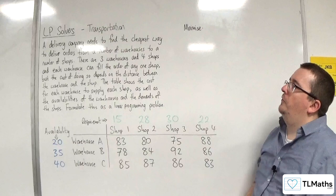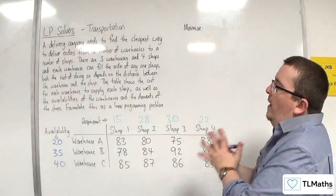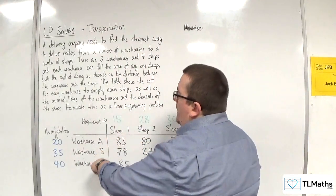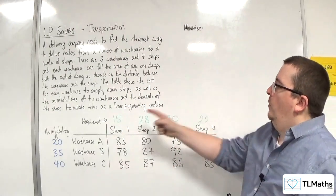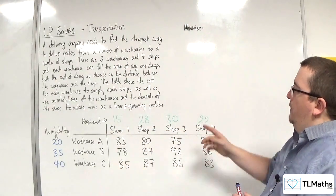There are three warehouses, so we've got A, B and C, and four shops: one, two, three and four.